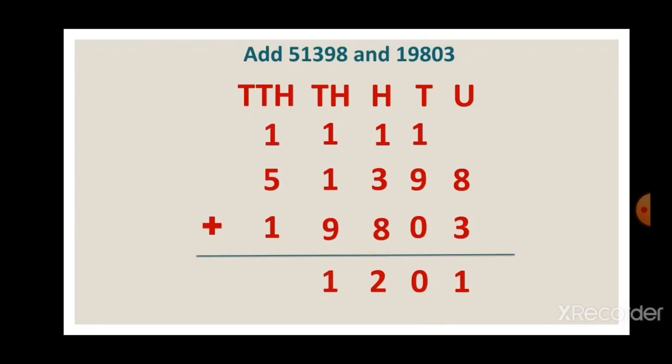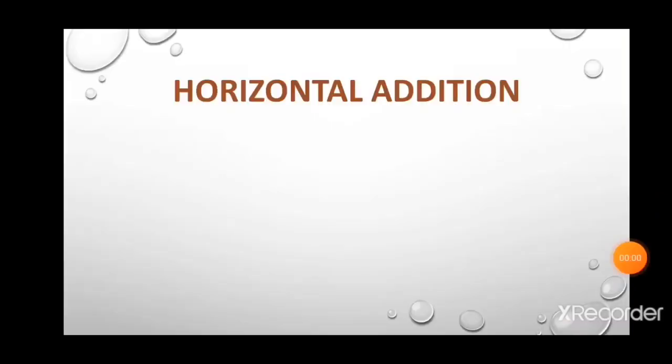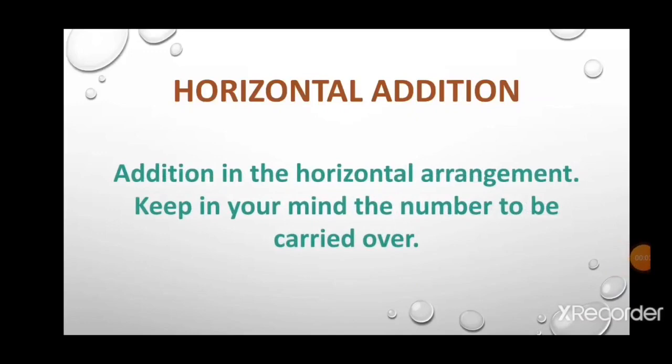In the ten-thousands place: 1 plus 5 makes 6, and 6 plus 1 makes 7, that is 70,000. So we write 7 in the ten-thousands place. Our answer is 71,201 — the sum of 51,398 plus 19,803 is 71,201.